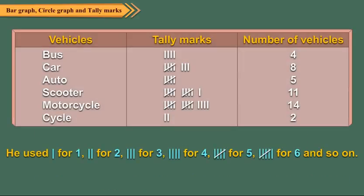Samir was trying to record the number of different vehicles passing through a road between 10 a.m. to 11 a.m. He used tally marks to record the observations. The table shows his observations.